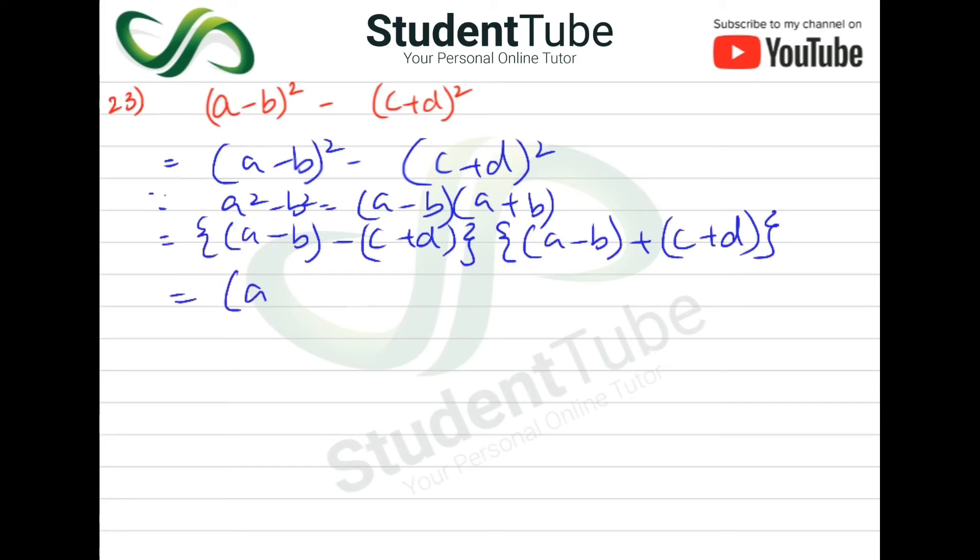So here this will happen: a minus b minus c minus d, then a minus b plus c plus d. Answer.